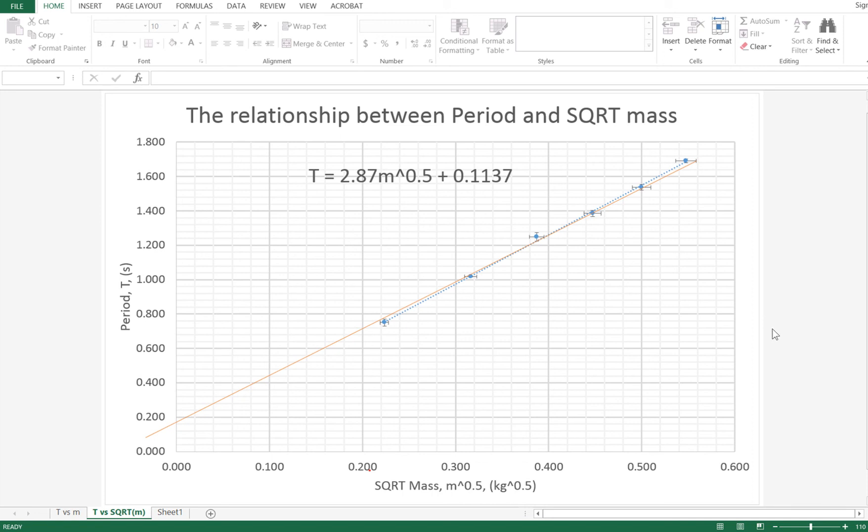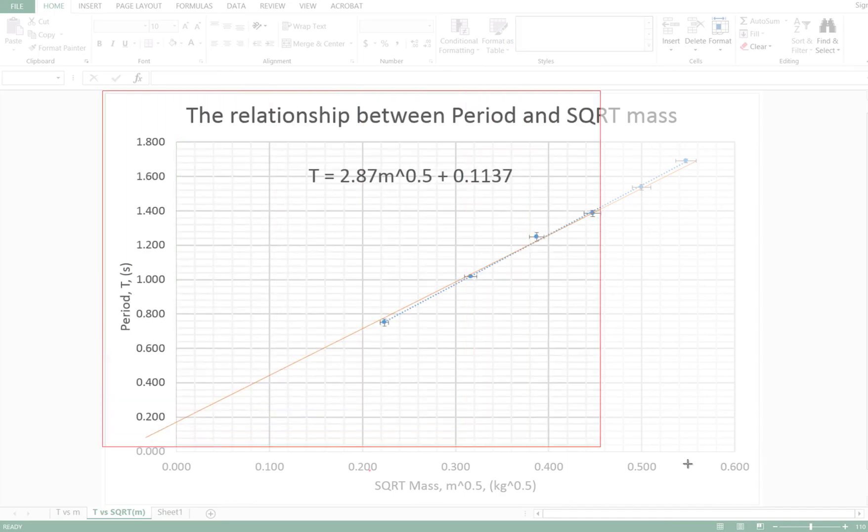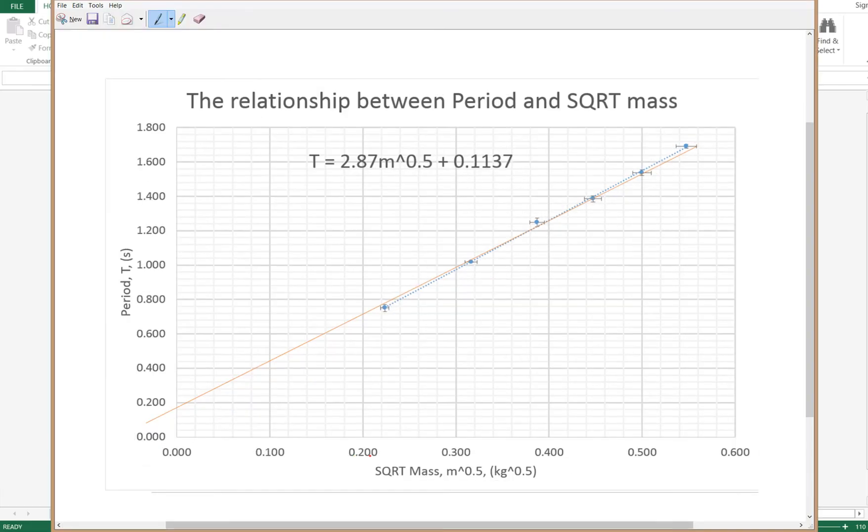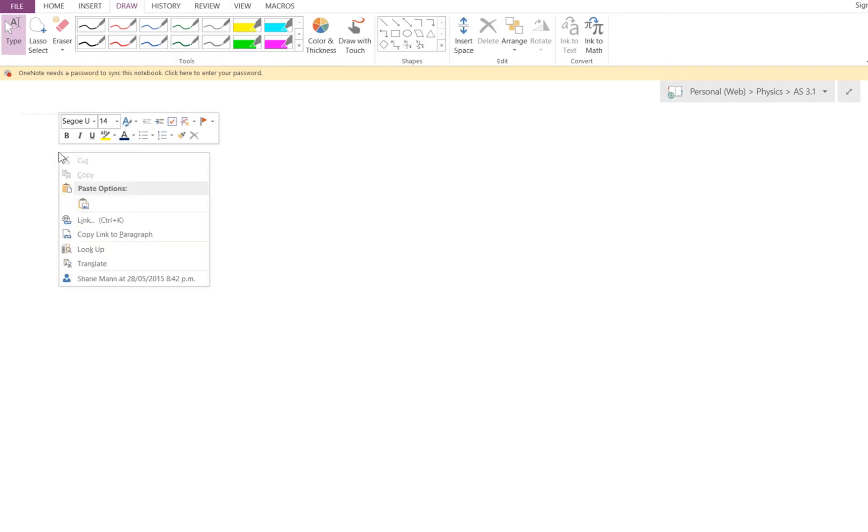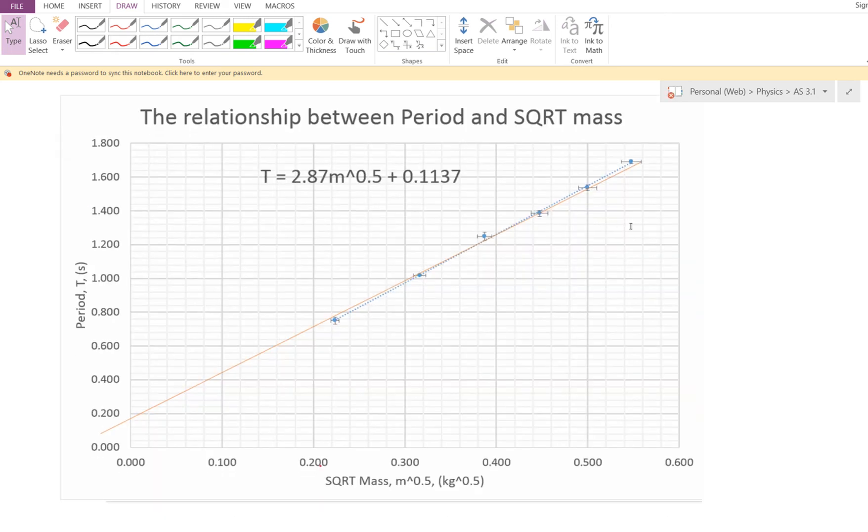Looking back at my line of worst fit, I think that's looking pretty good. So what I can now do is I can actually manually calculate what the gradient is, what the y-intercept is, and I'm going to do that just using some simple mathematics. So what I'll do, so I can draw all over this and demonstrate things, I'm going to actually take a snip of this graph and I'm going to put it into OneNote. And that way I'll be able to draw all over it and show you what I'm doing step by step.